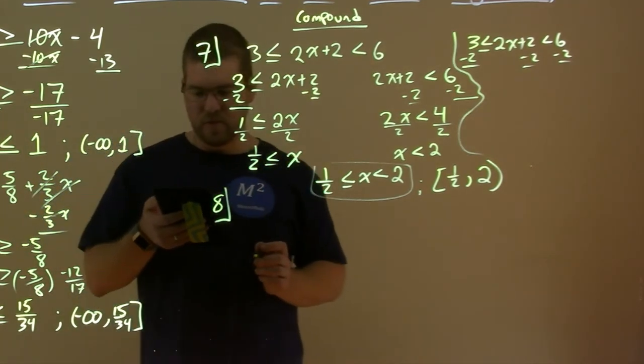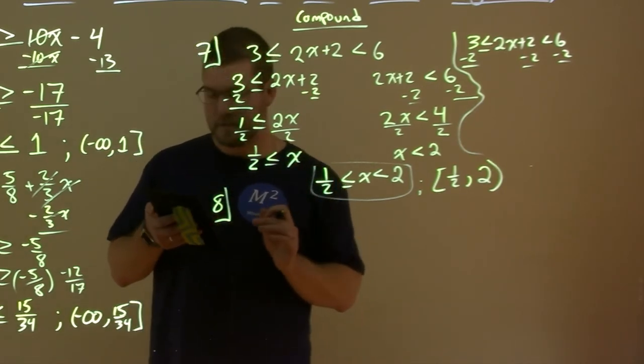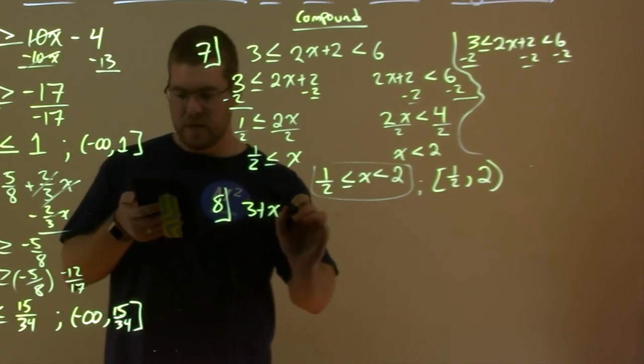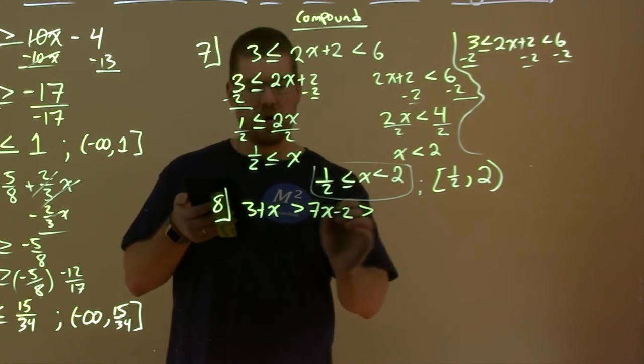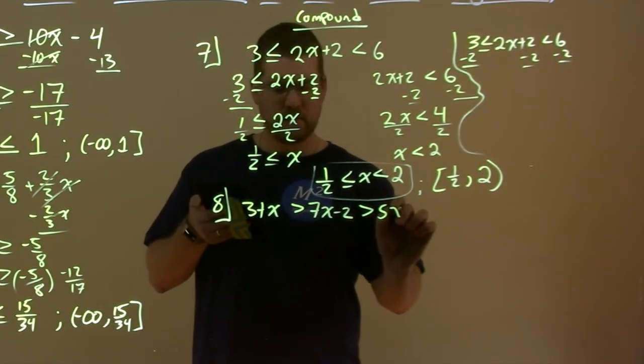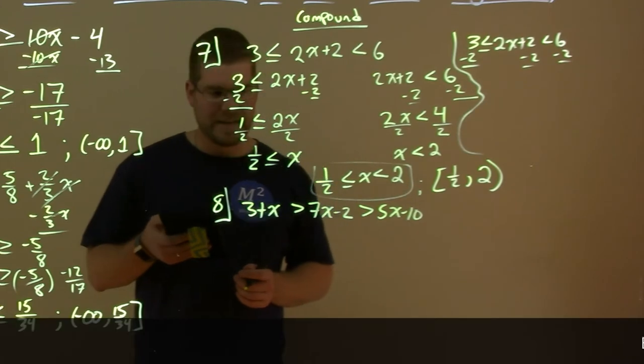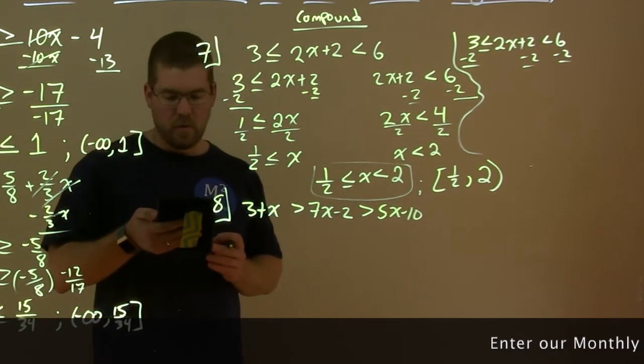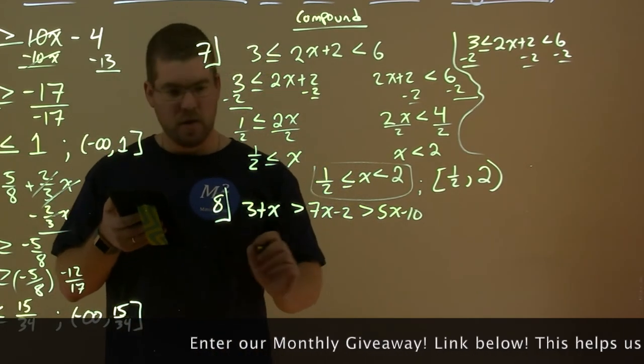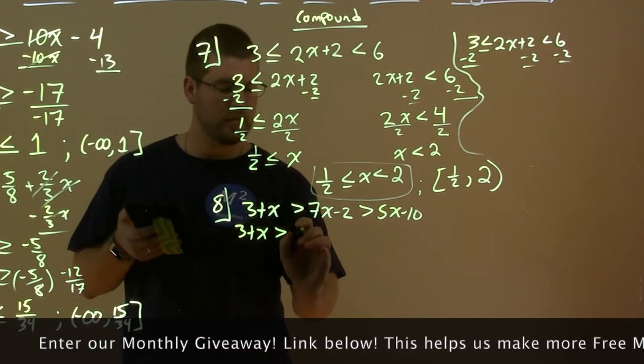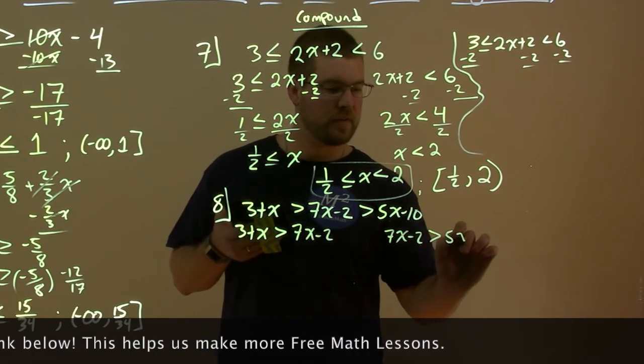Number 8 here. So, this is a tricky one. We're going to solve a compound inequality with the variable in all three parts. We have 3 plus x which is greater than 7x minus 2, which is greater than 5x minus 10. So, let's go solve each inequality individually. Like we did the first. This method up here. So, we have 3 plus x is greater than 7x minus 2. And we have 7x minus 2 is greater than 5x minus 10.